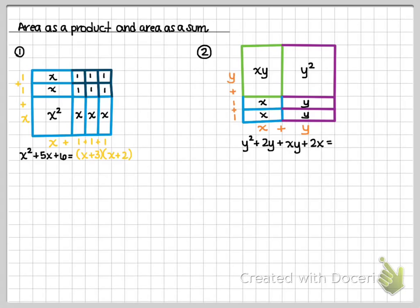So, now that I've got my dimensions for my base and my height, I know that my base is x plus y times my height for this object is going to be y plus 2. So, I have my area as a sum, and my area as a product.